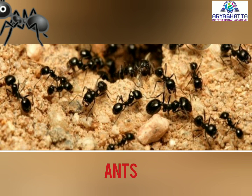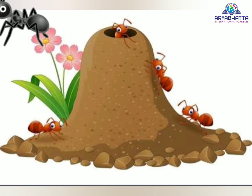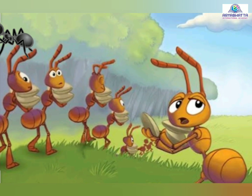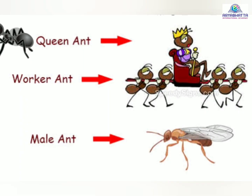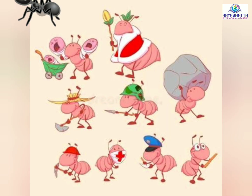Ants live in an anthill. Like bees, ants also work together. The worker ants work outside to gather food and protect their anthill. You must have seen a line of ants moving towards sweet food. It shows their togetherness and cooperation.